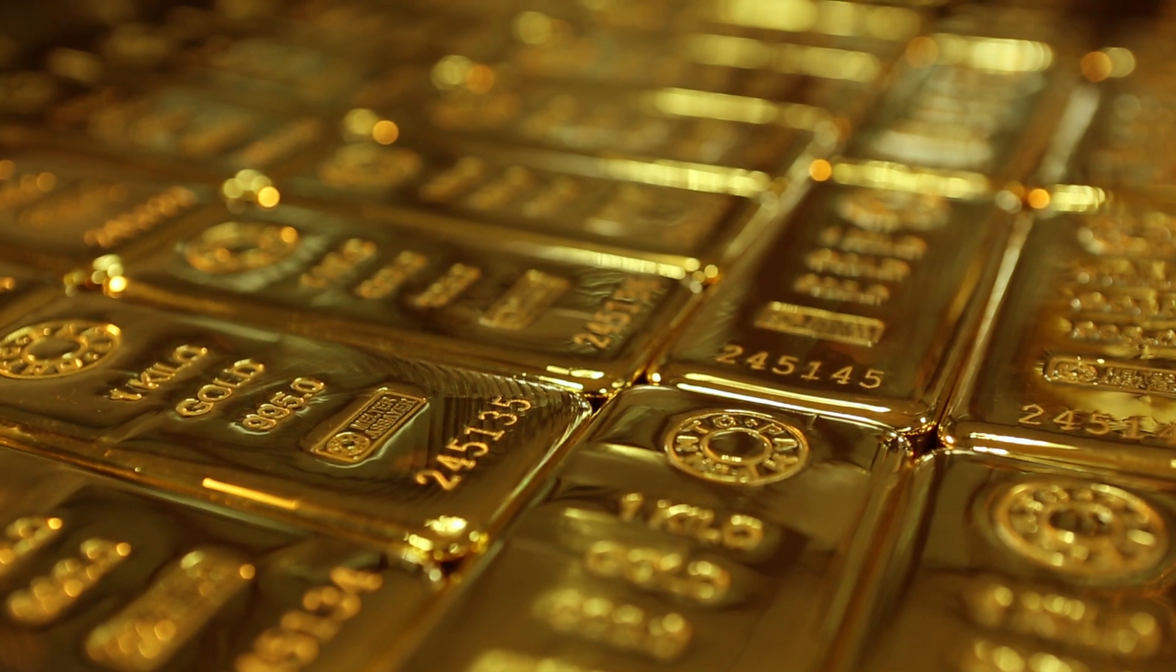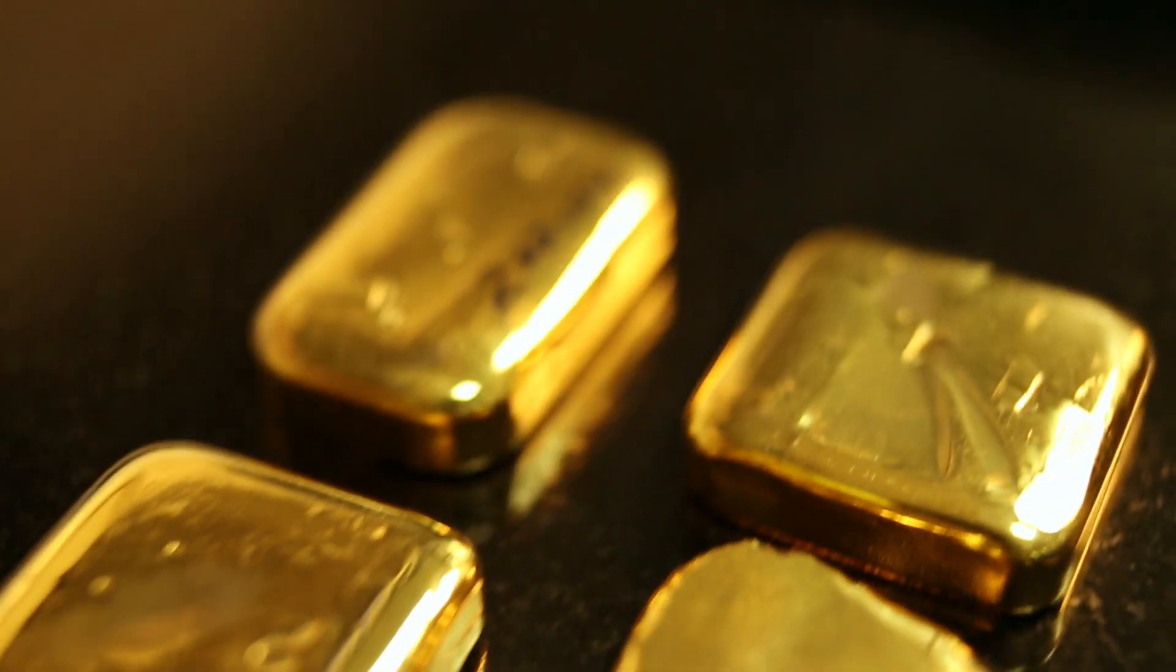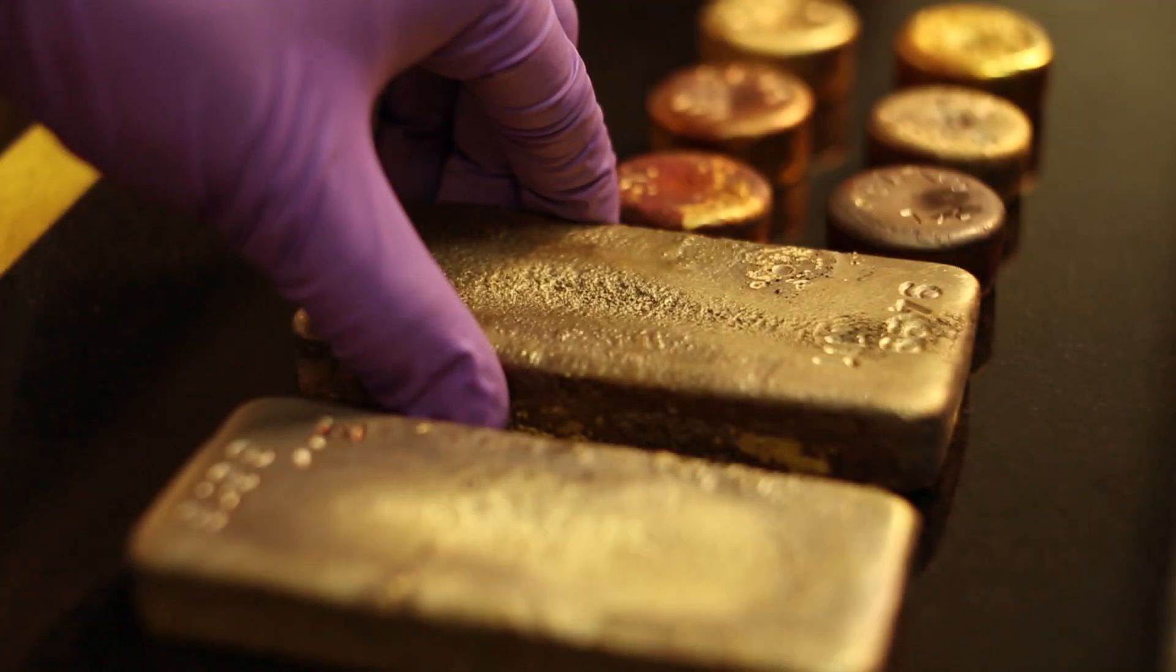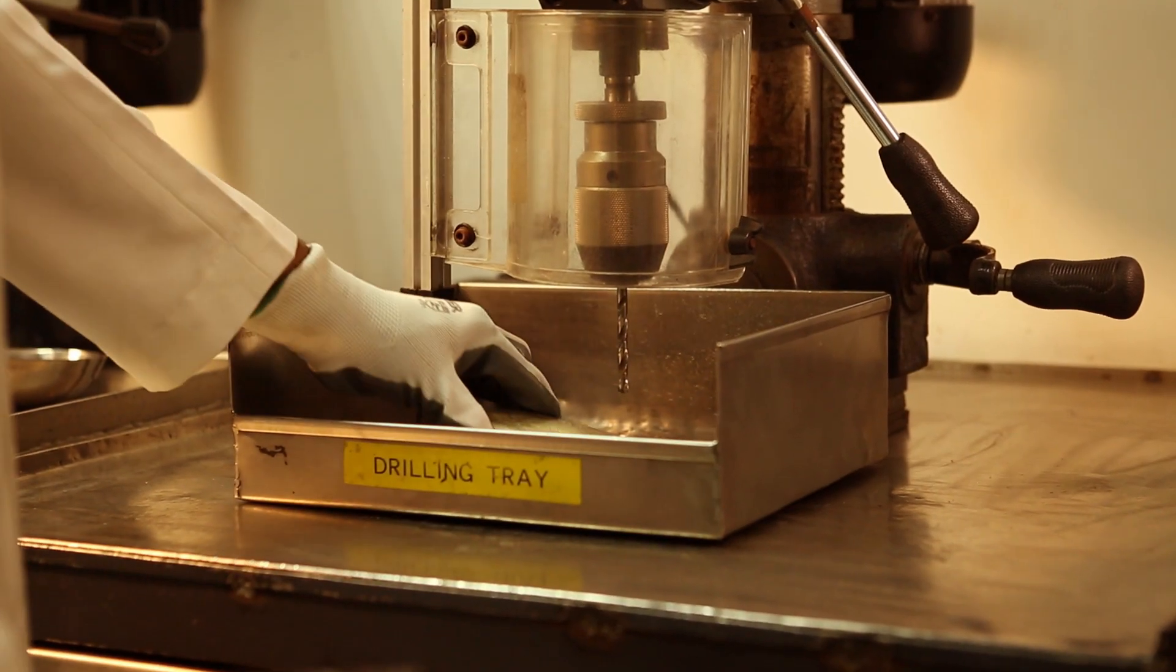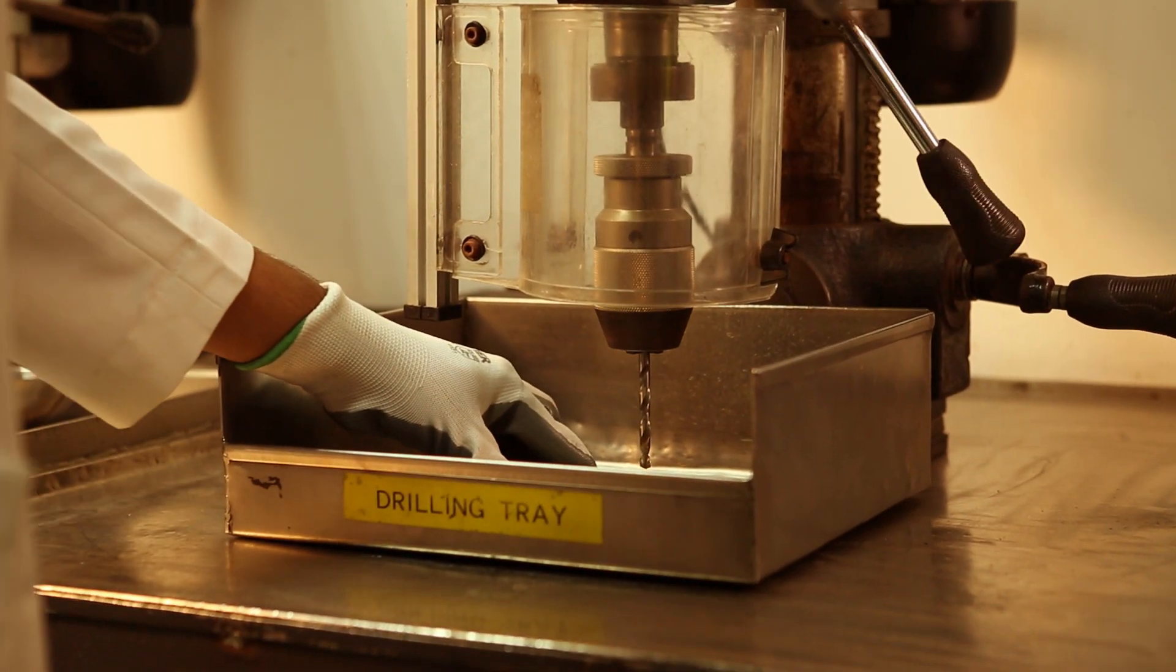Purity can be accurately determined by the process of assaying. Let's find out how exactly it all unfolds. We'll begin with the oldest known method of assaying gold, fire assay.